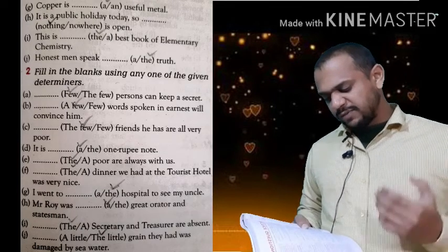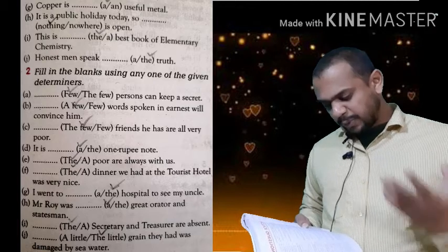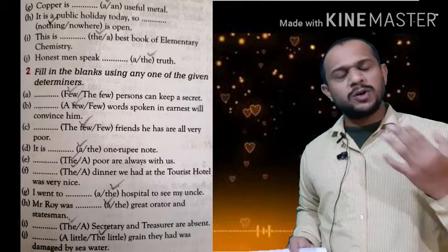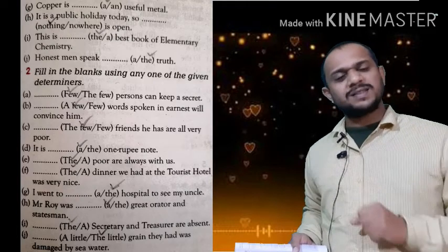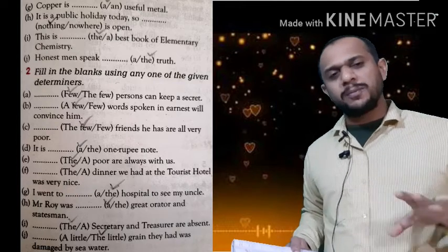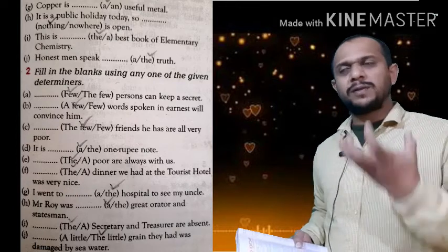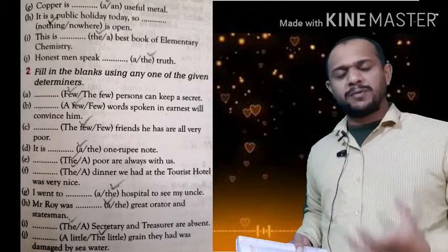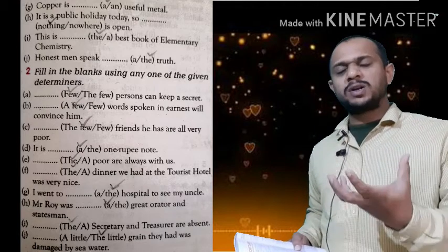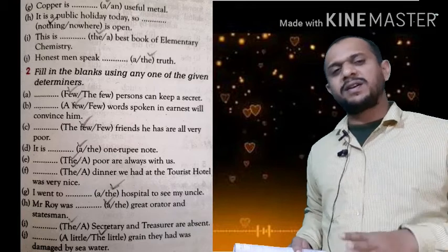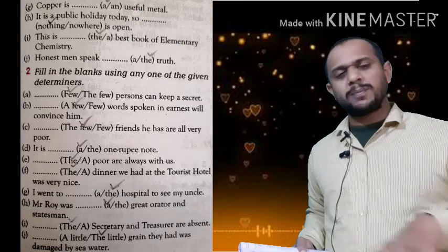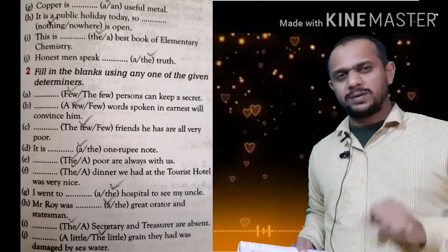Exercise: 'Dash poor are always with us.' Here we are not talking about a single poor person — we are talking about the whole community of the poor. Before a group or community, we keep definite article 'the': 'The poor are always with us.'